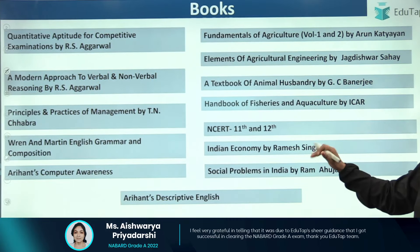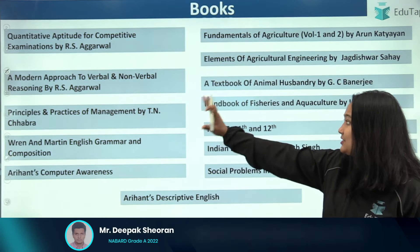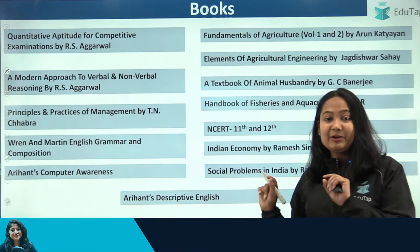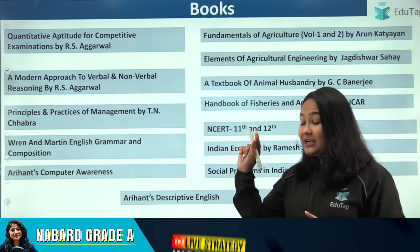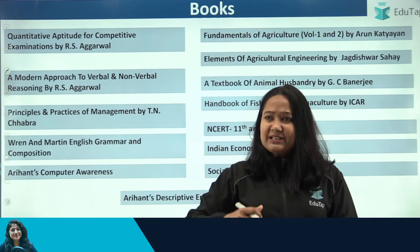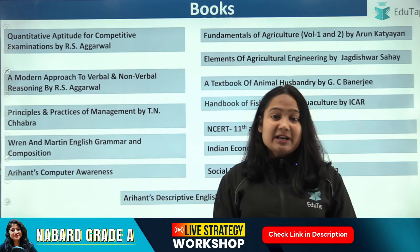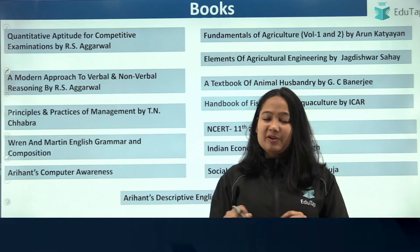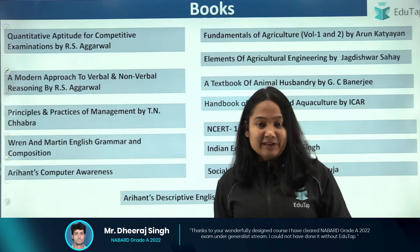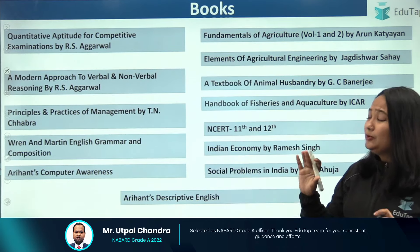Before I move on to discussing each book for every section, here is the complete book list. You can see quant, reasoning, English, and computer/decision making will be covered in the first section. Then we have what you need for the merit section, and then descriptive English. One disclaimer: for current affairs — for any regulatory body examination where current affairs plays a big role — you don't have to refer to any book. There are better sources I will discuss at the end.